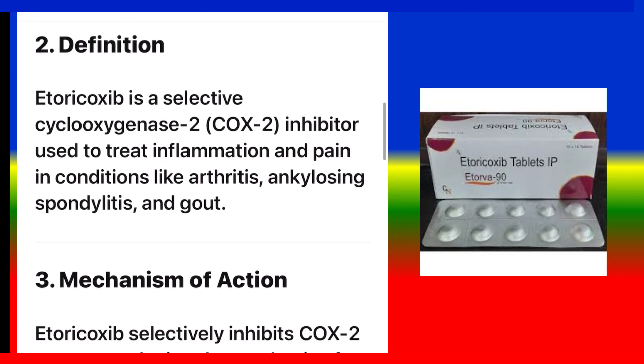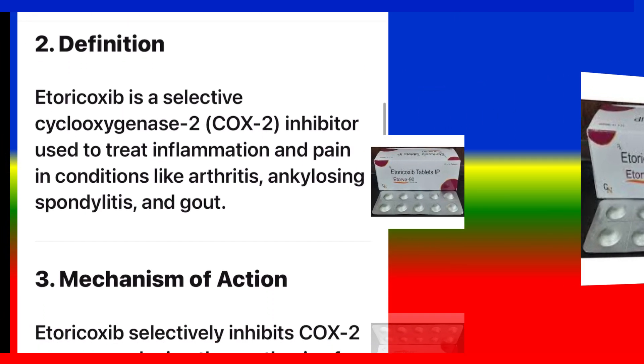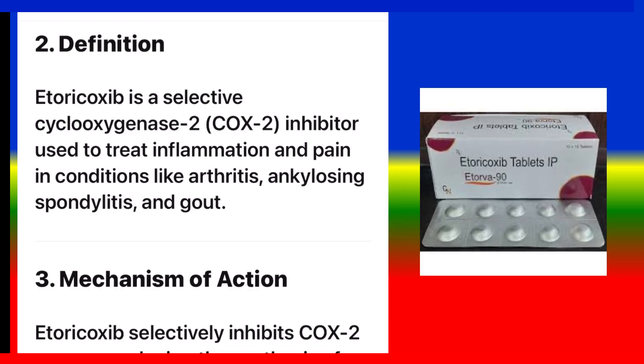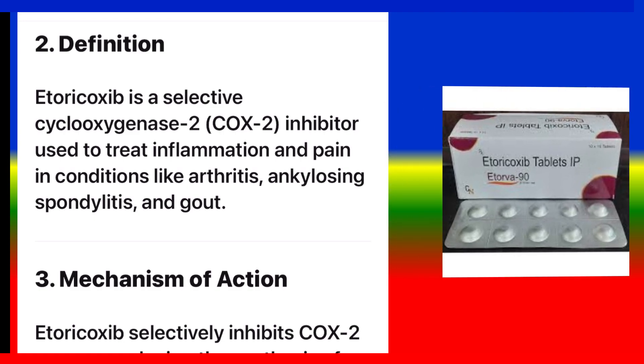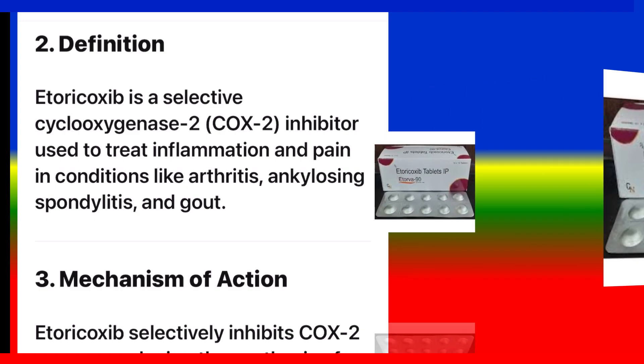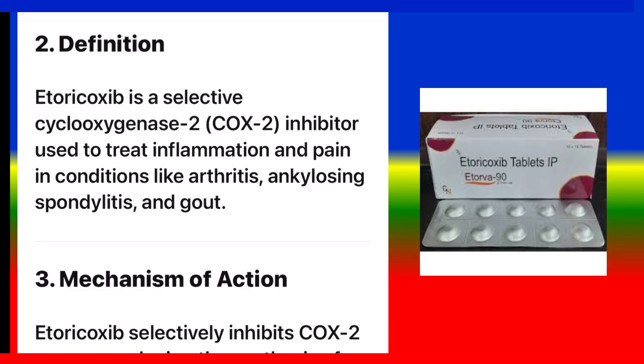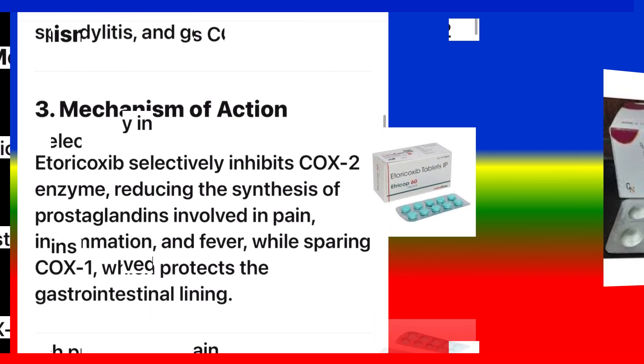Definition: Etoricoxib is a selective cyclooxygenase-2 (COX-2) inhibitor used to treat inflammation and pain in conditions like arthritis, ankylosing spondylitis, and gout.